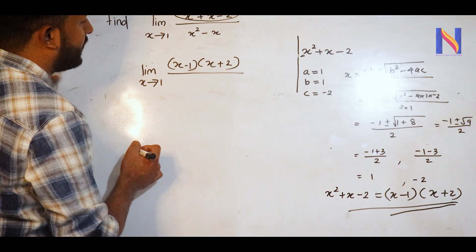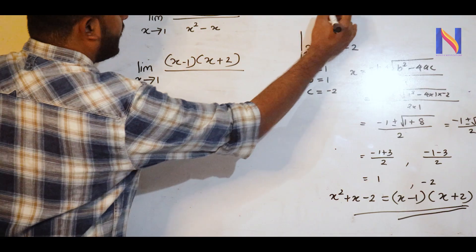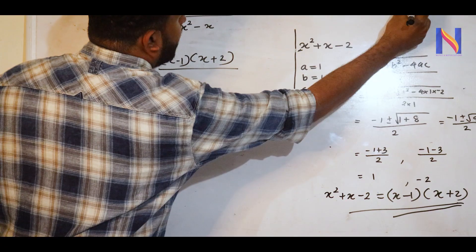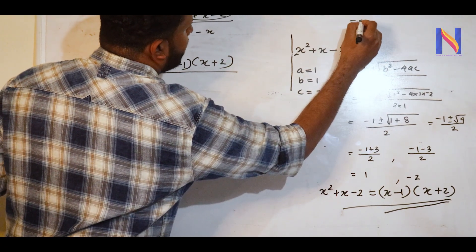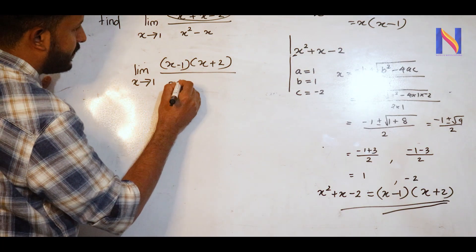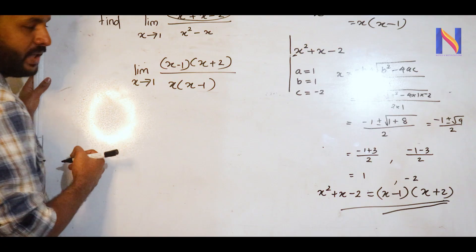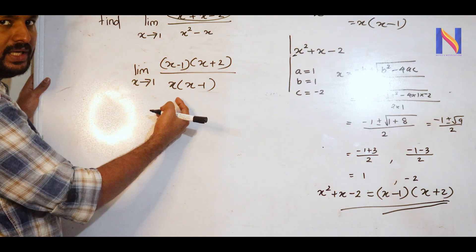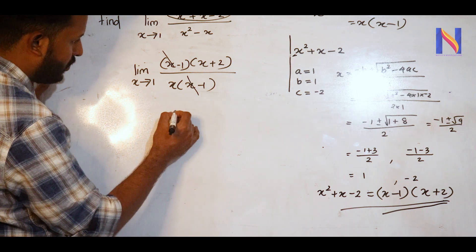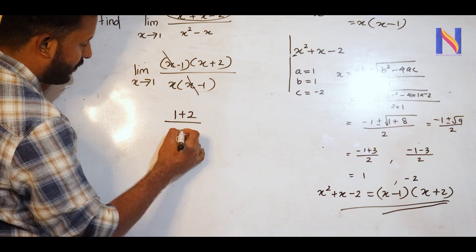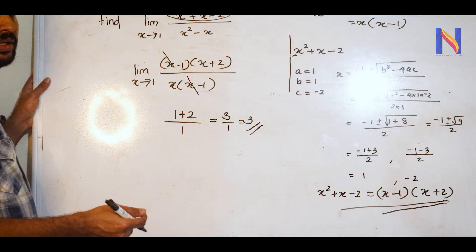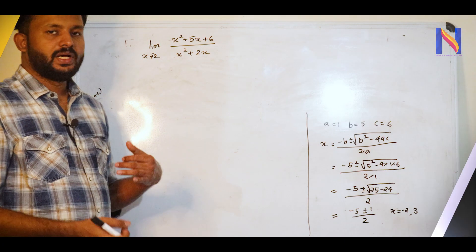So we have (x − 1)(x + 2) divided by (x − 1)(x + 1). We can cancel the common term (x − 1). So we get (x + 2)/(x + 1). Substituting x = 1: (1 + 2)/(1 + 1) = 3/2. That's the answer — 3/2.